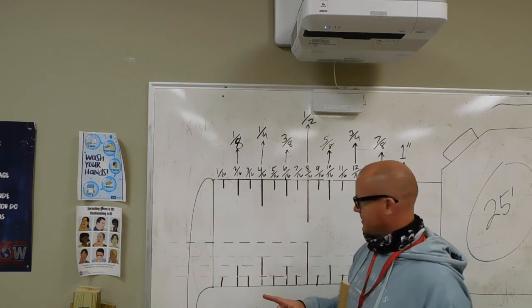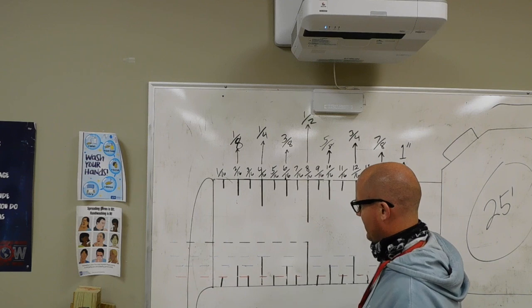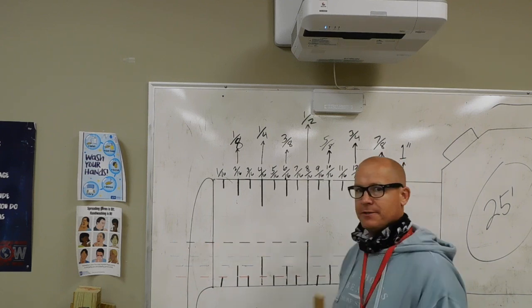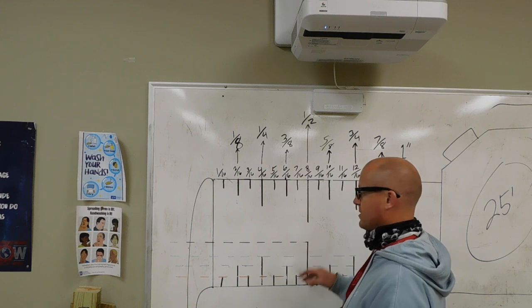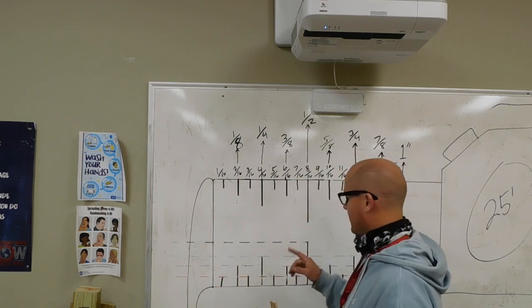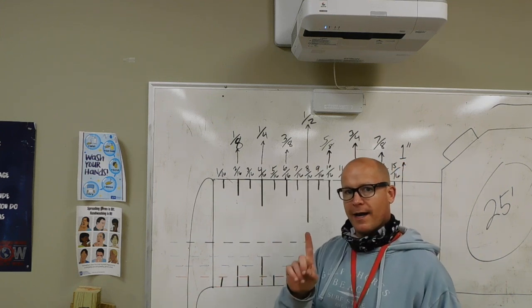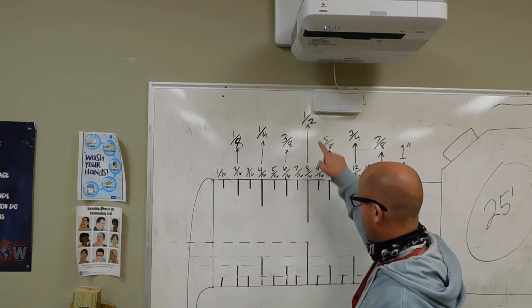So the second method I teach is the depth of the line method. So we all see that on our tape measures, we'll have the full inch, and right in the center there'll be one mark that's longer than all other marks. There's only one of them because there's only one half. So that mark is one half.